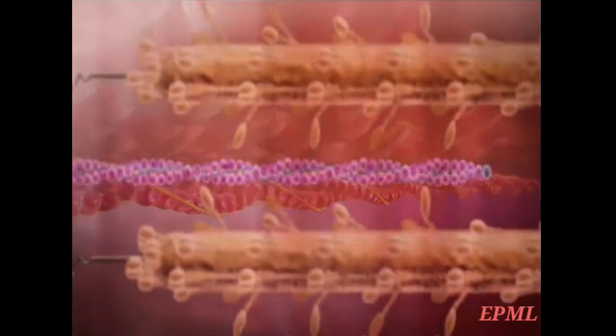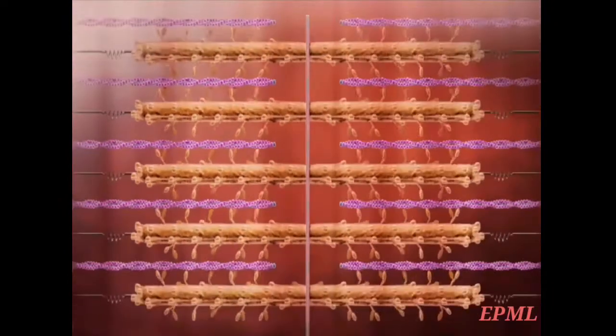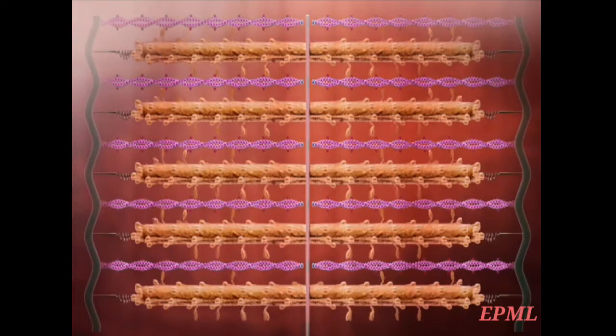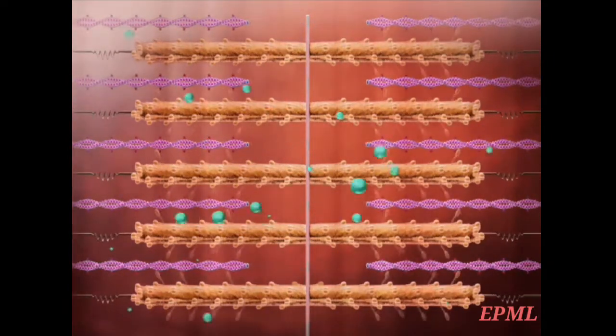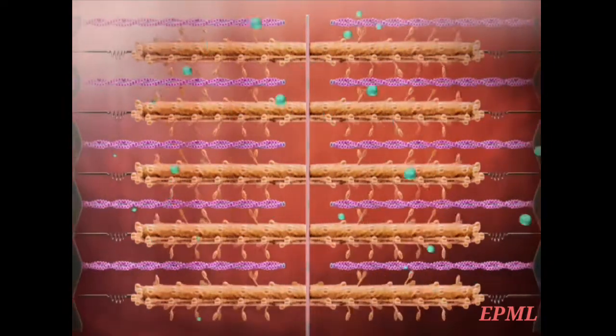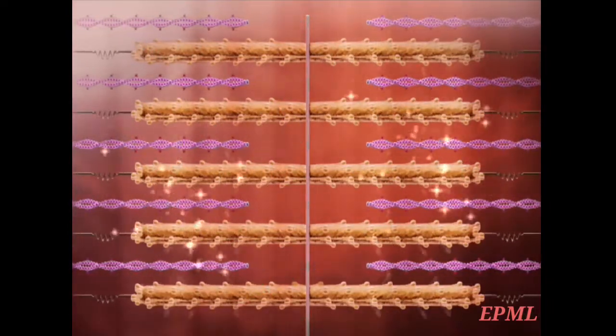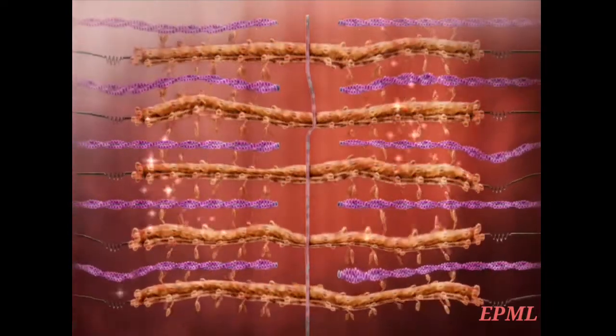The absence of functional dystrophin weakens the attachments and the sarcolemma tears easily. The small tears allow excess calcium ions to enter muscle fibers, triggering the release of enzymes that damage actin and myosin filaments.